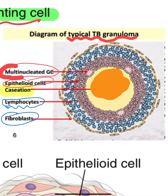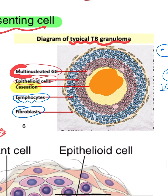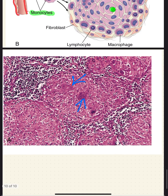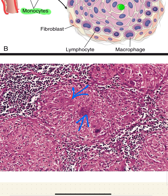This is the typical granuloma in the case of TB. Now let's look at this histological slide. Here are two foci of the TB granuloma — you can see these cells, and the periphery is lined by the nuclei. Similarly, in this second focus, the periphery is also lined by the nuclei.